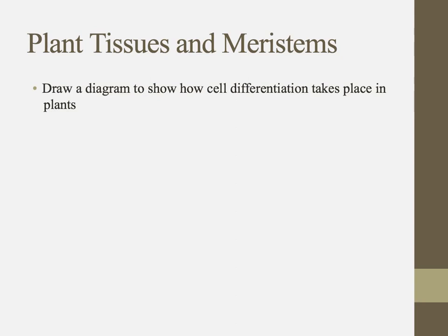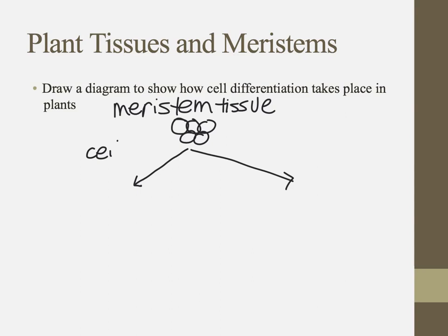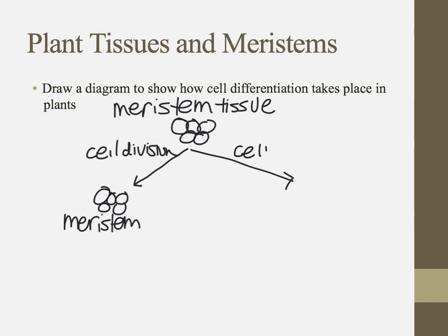Let's take a look at what this might look like in a plant. Here I've got a group of meristematic cells — meristem tissue being a group of cells with a similar function. Through cell division, one of two things happens. Some of these meristem cells are going to copy themselves and divide via mitosis to become other meristem cells, so they regenerate and make more undifferentiated cells.